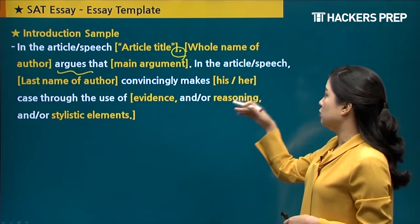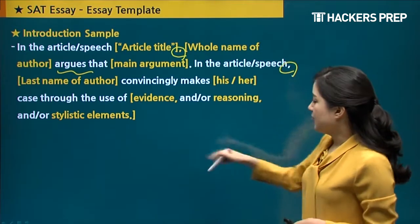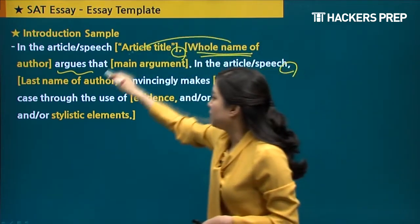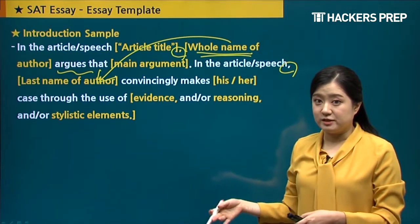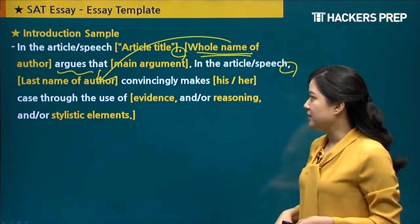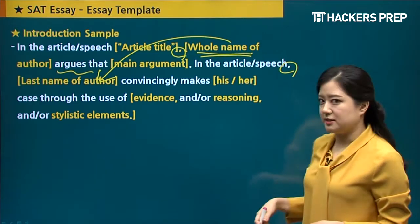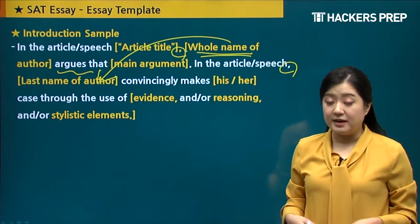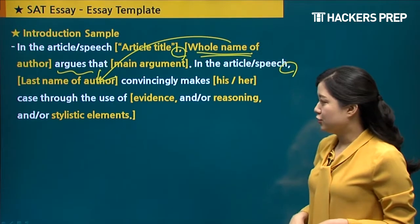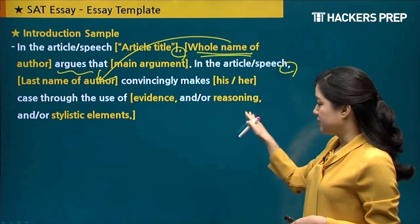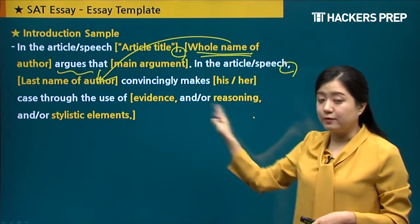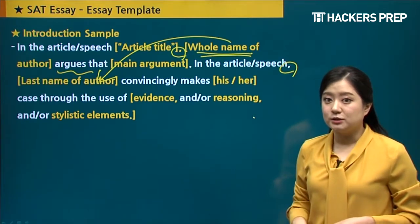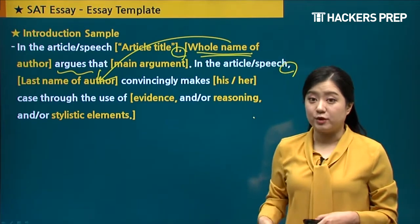The second sentence: 'In the article' or 'in the speech,' then the last name of the author — since you already stated the full name first, you can use just the last name here. Then write 'convincingly makes his or her case' — the prompt will tell you whether it's a male or female author — 'through the use of evidence, and/or reasoning, and/or stylistic elements.' If the passage has all three, list all three; if it only has two, just choose those two. These are your typical two sentences for the introduction.